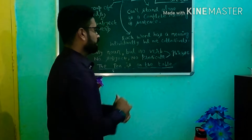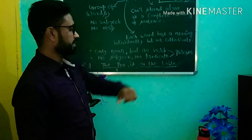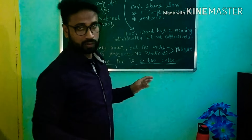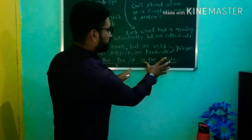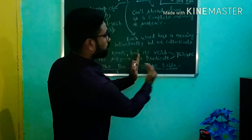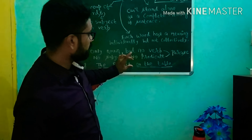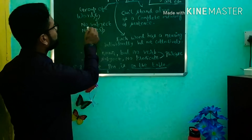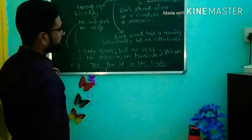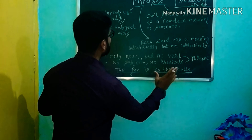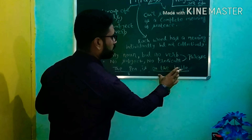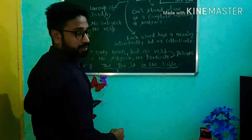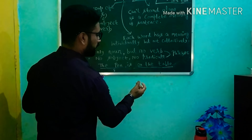If we separate the section 'on the table,' we can say that 'on the table' is a prepositional phrase. Because individually, 'on' has a meaning and 'the table' also has a meaning, but collectively when we combine these words together, 'on the table' has no complete meaning by itself. So each word has a meaning individually, but not collectively.